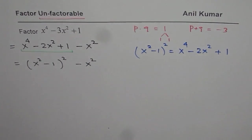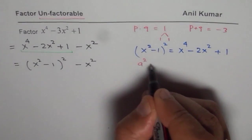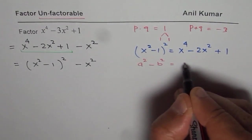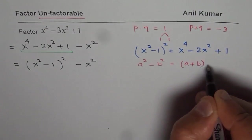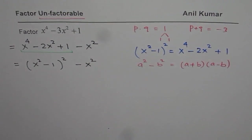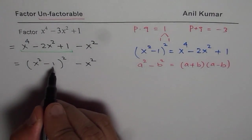we can apply difference of squares. a^2 - b^2 is (a + b)(a - b), correct? So a is x^2 - 1.